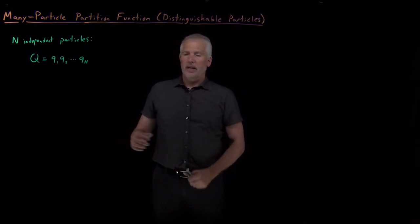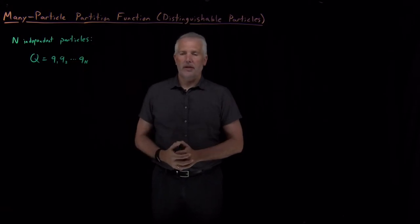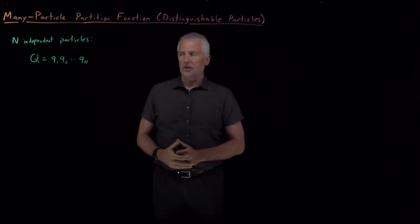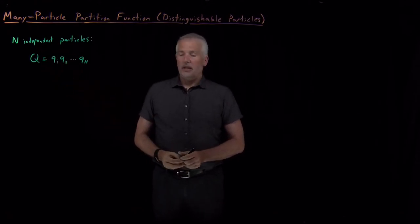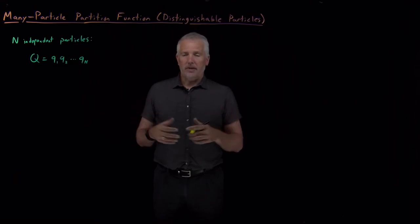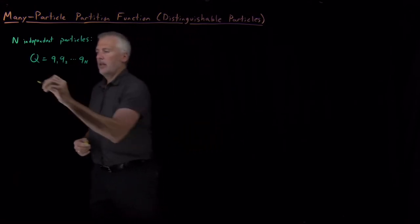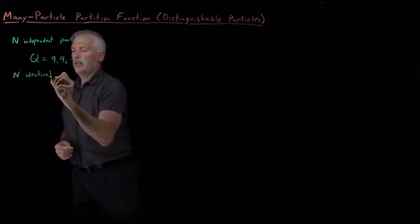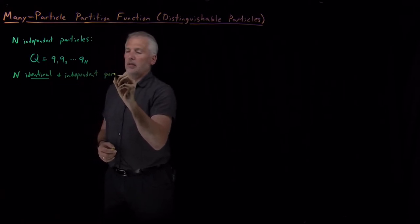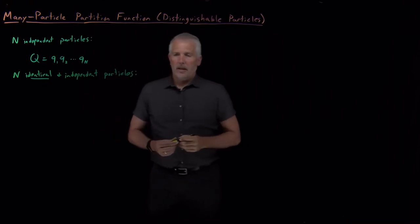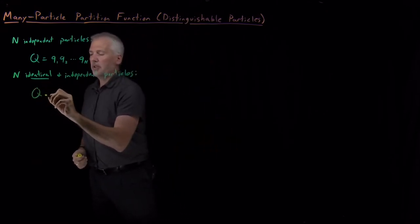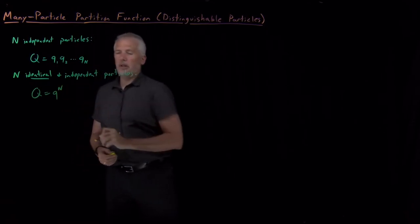If we have a system with n independent subsystems, or in particular, n individual particles that are independent from one another, we can write the partition function for the whole system as the product of the smaller partition functions, where each one is for one of the particles. If those molecules are identical as well as independent, then I don't have to calculate a separate partition function for molecule one, two, and three — their partition functions are all the same, and so this expression just becomes q raised to the nth power.